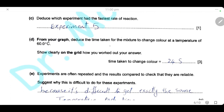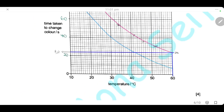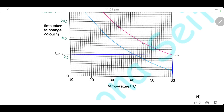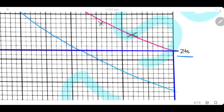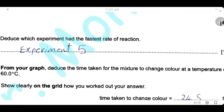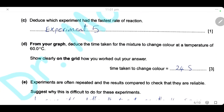From your graph, deduce the time taken for the mixture to change color at a temperature of 60°C. You have to show your work on the grid. At 60°C, we draw a vertical line to the red curve and measure how many seconds are needed for the color change. As we can see here, it is 24 seconds.